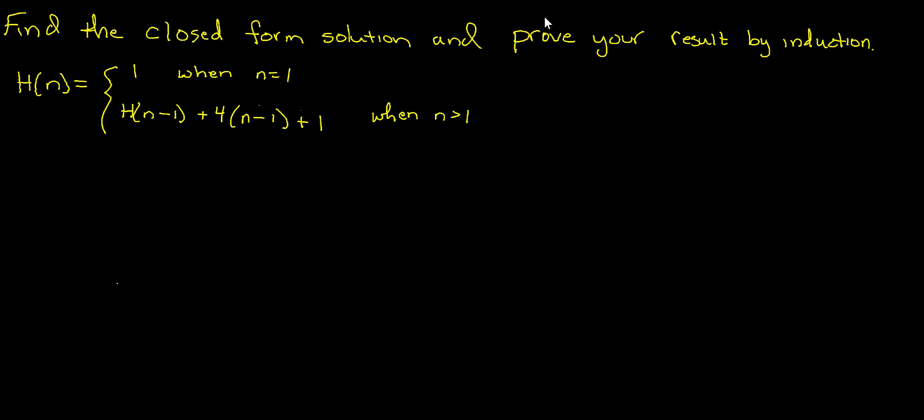Hi everyone, in this video I'd like to talk about how to find the closed form solution and prove your result by induction. So here we have a recursively defined sequence: H(n) equals 1 when n equals 1, and H(n) equals H(n-1) plus 4 times (n-1) plus 1 when n is greater than 1.